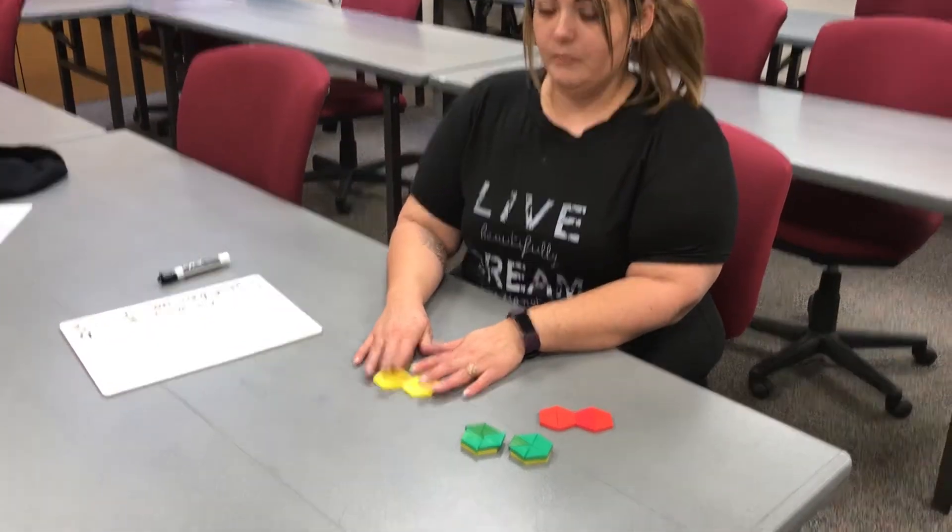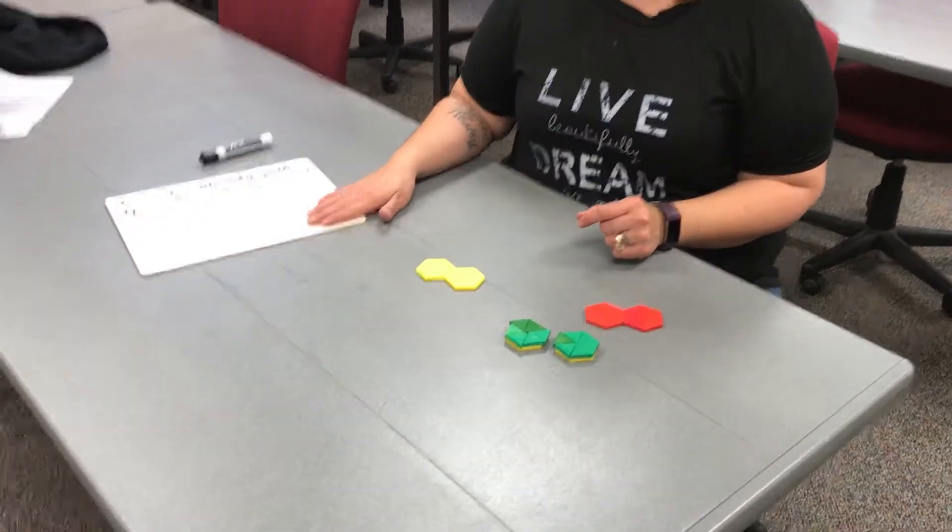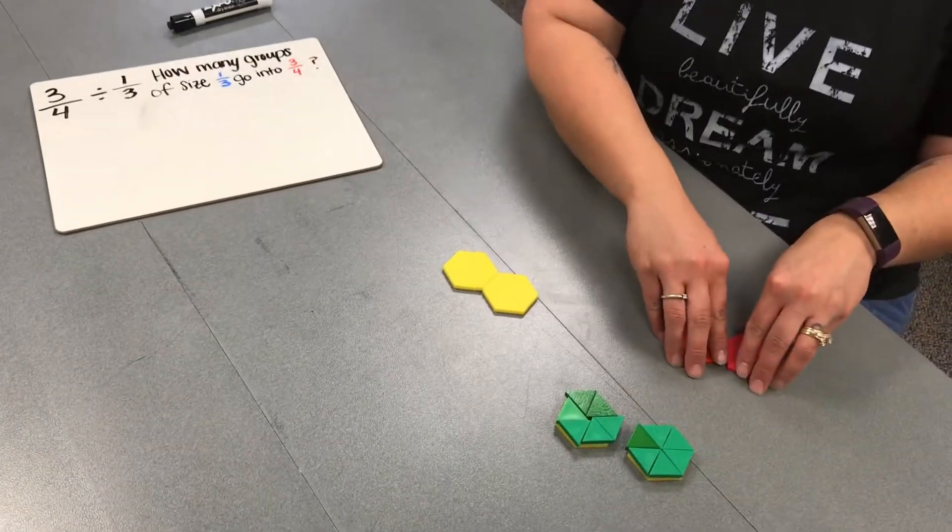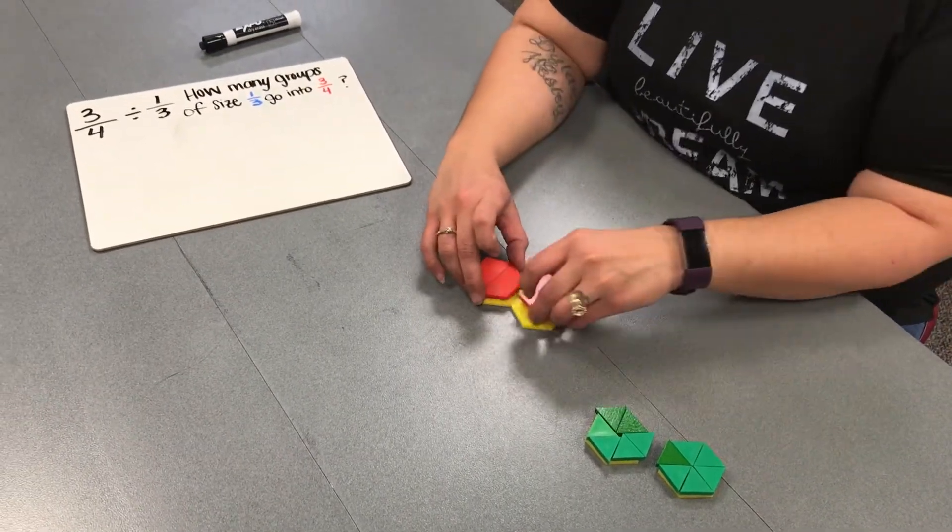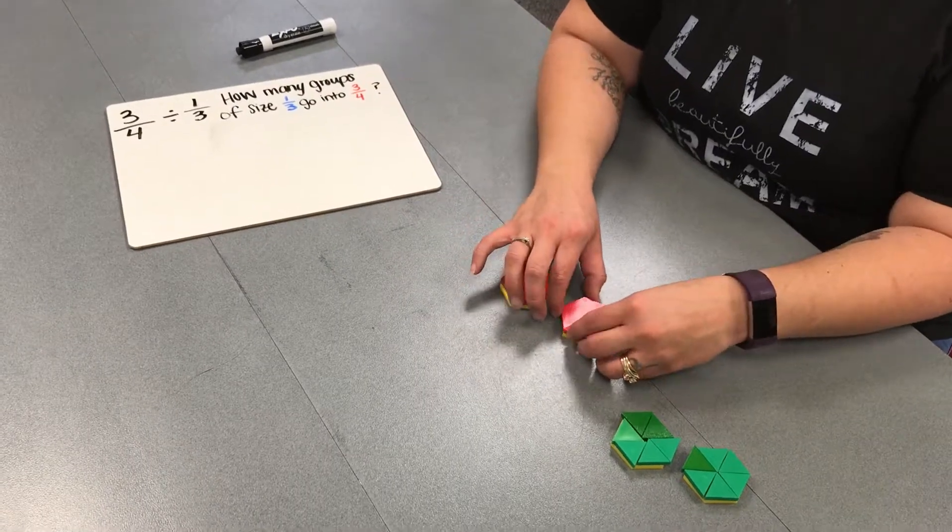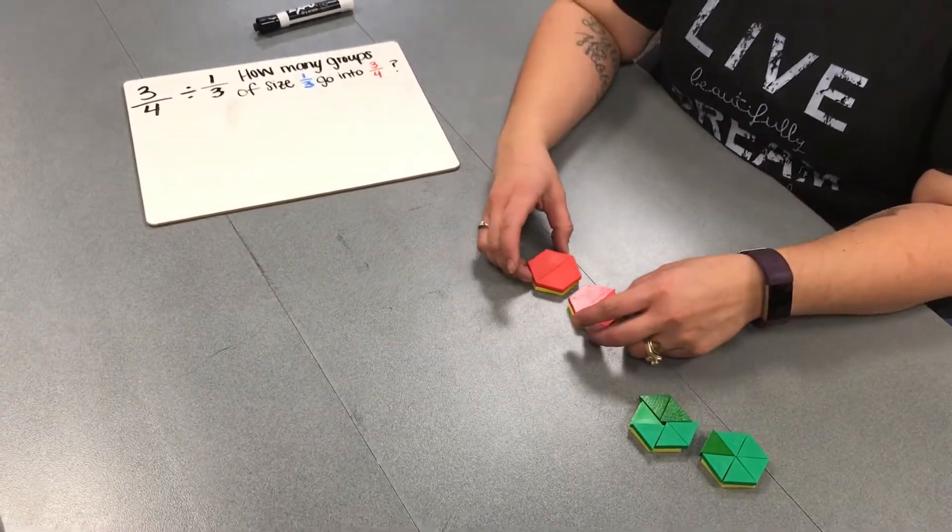So here we have our whole. Our first step is to find 3 fourths of the whole. So we can take these trapezoids and see that 4 trapezoids create our whole.